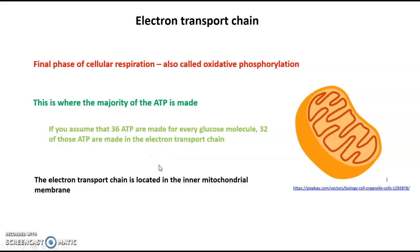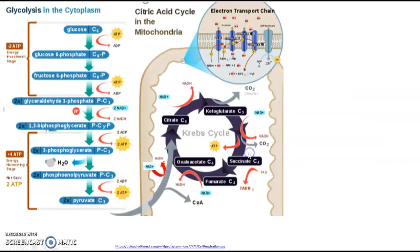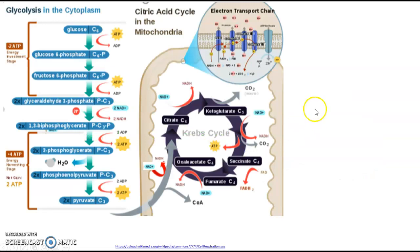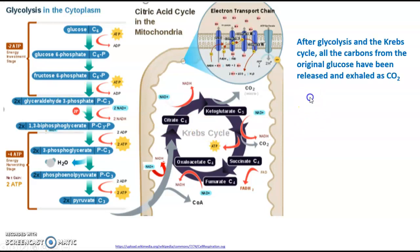The electron transport chain is located in the inner mitochondrial membrane, indicated here in this picture of a mitochondria with this dark orange line. We have covered glycolysis, which occurs in the cytoplasm, and the Krebs cycle, which occurs in the mitochondrial matrix, in previous videos.